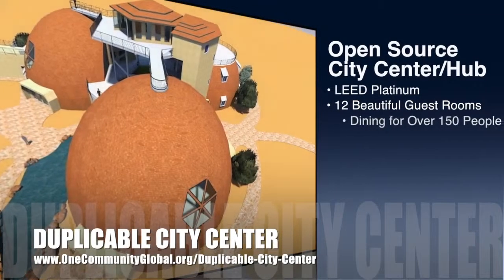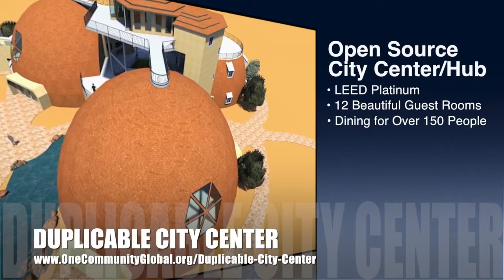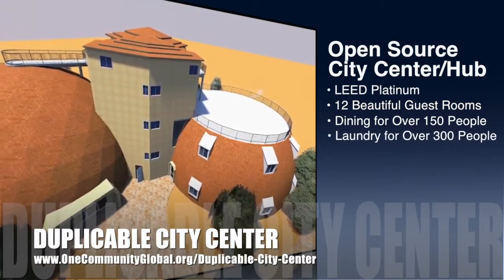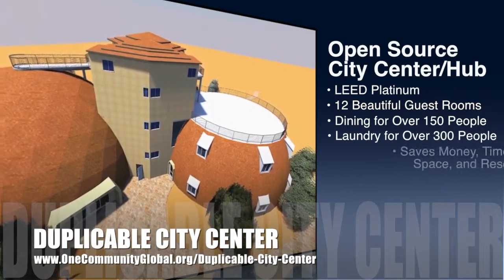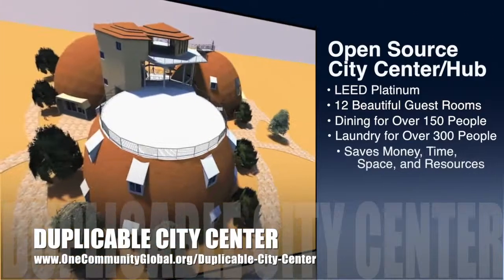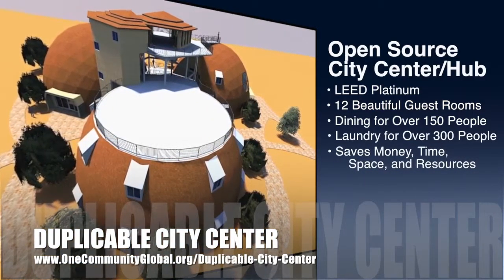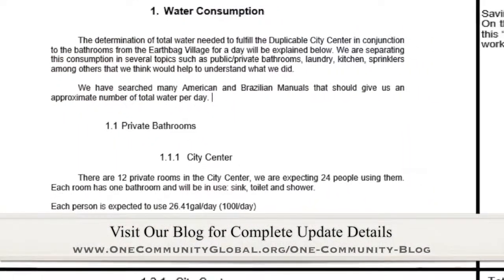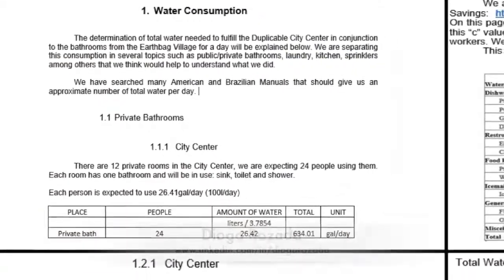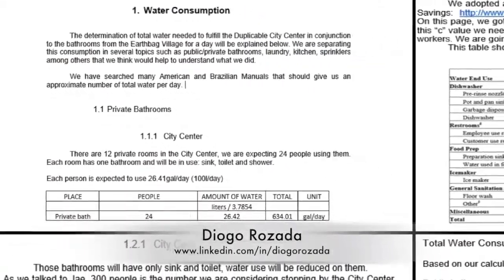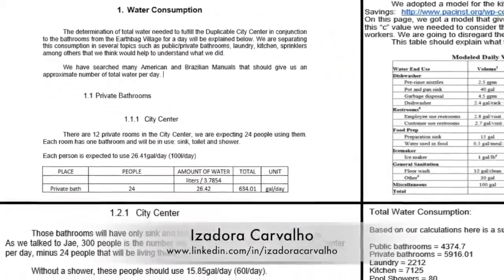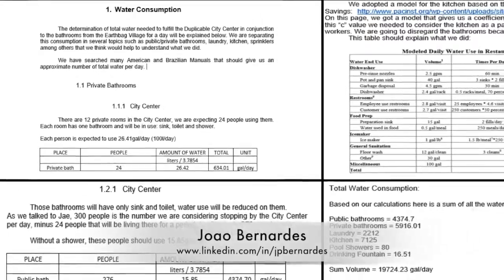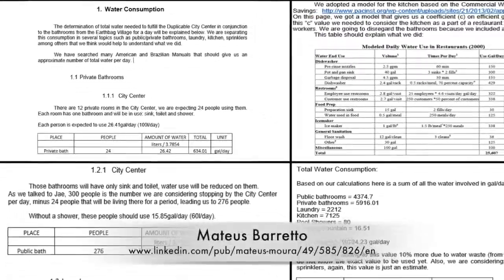One Community is also creating an open source duplicable city center. It is designed to be LEED Platinum certified, provide 12 guest rooms, dining for over 150 people, and laundry and recreation space for over 300 people — all while saving money, time, space, and resources.